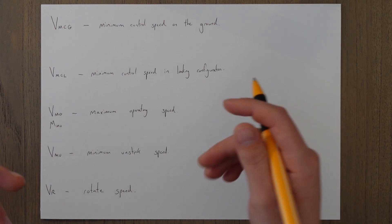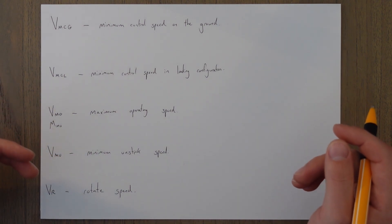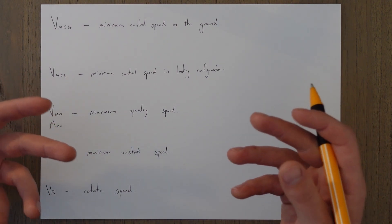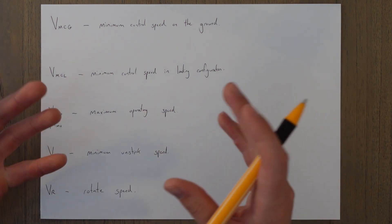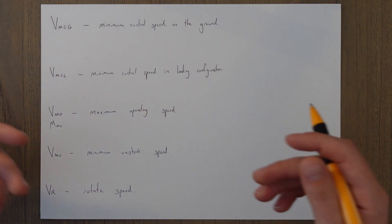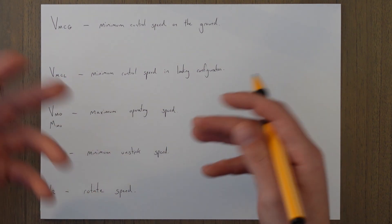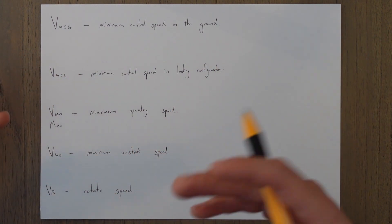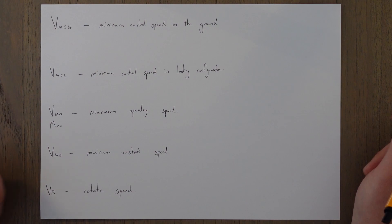So in my head I always add the word clean onto the end of VMO as it is the maximum speed in the clean configuration. That's not official but that's just something in my head because I find that the maximum speed if you've got flaps out is your flap limiting speed. VMO and MMO, maximum operating speeds.